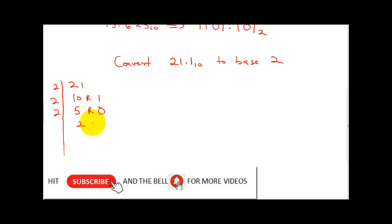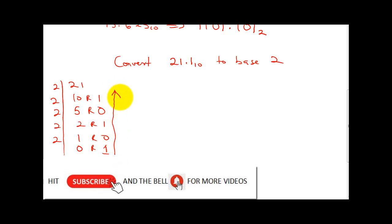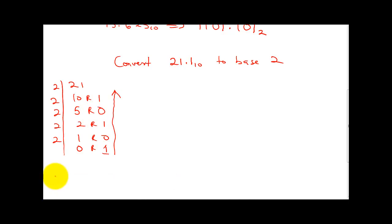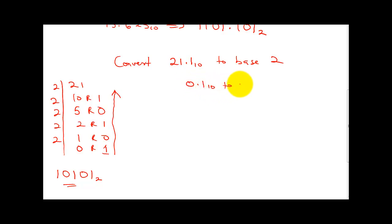2 into 21 we have 10 remainder 1. 2 into 10 we have 5 remainder 0. 2 into 5 we have 2 remainder 1. 2 into 2 we have 1 remainder 0. 2 into 1 we have 0 remainder 1. Counting from bottom to top, this is going to be 10101 base 2.